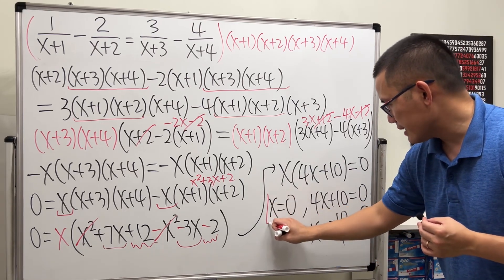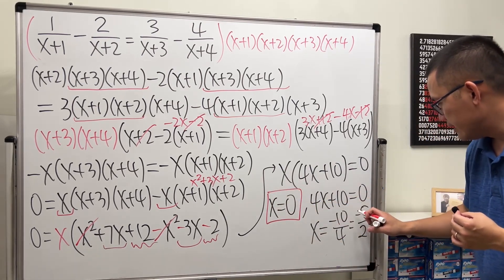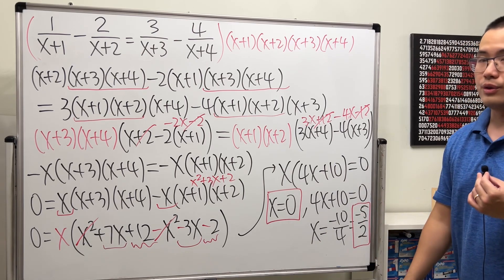So, as we can see, we have two answers. x equals 0, and then the other one is negative 5 over 2.